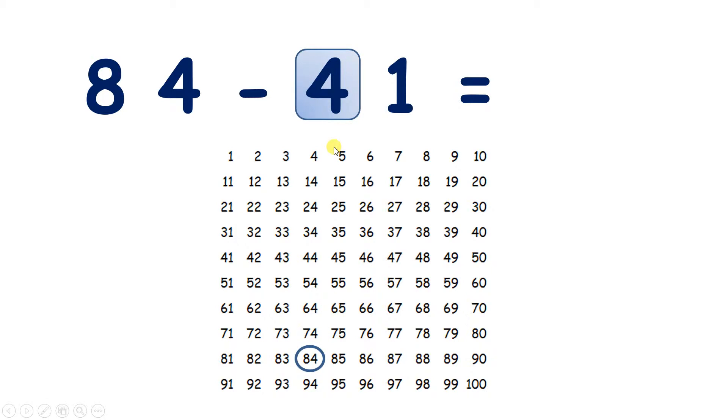So we start on 84, and we want to subtract four tens. And remember, on a hundred square, you subtract 10 by going up one place. So we're subtracting four tens, so we can go up one, two, three, four places.